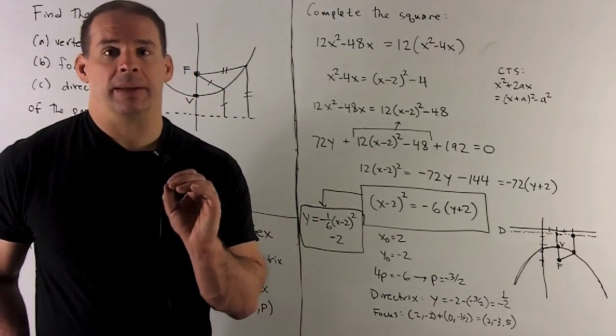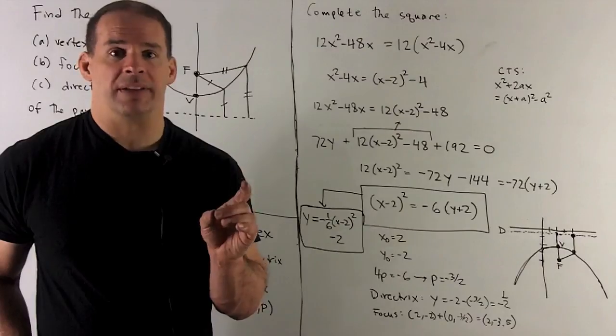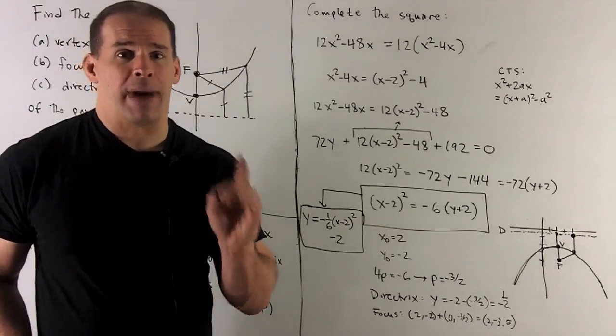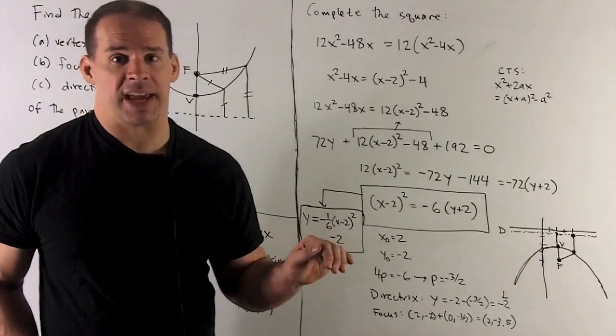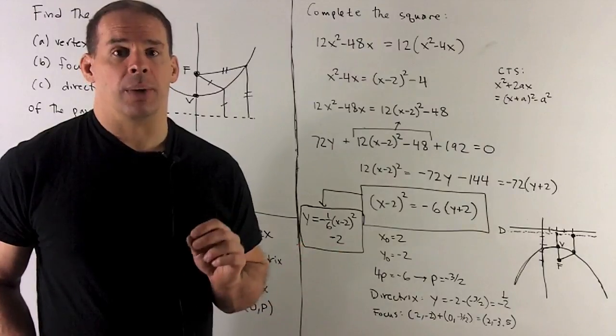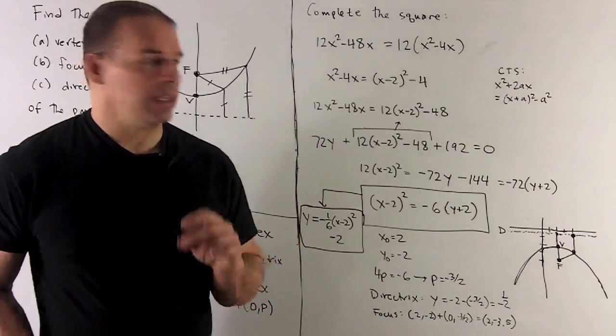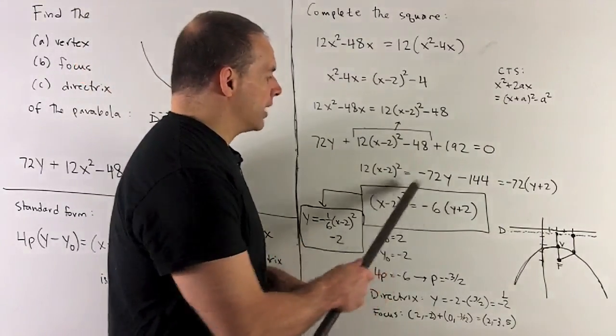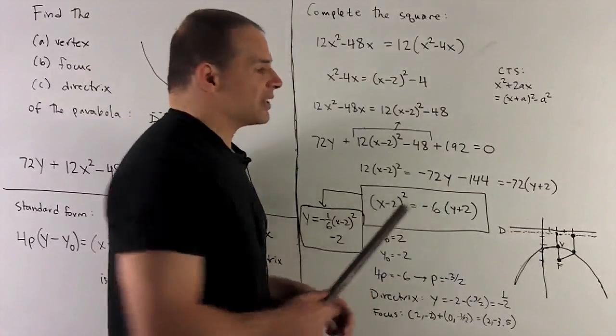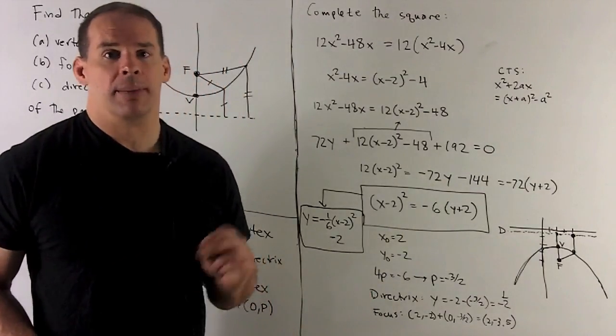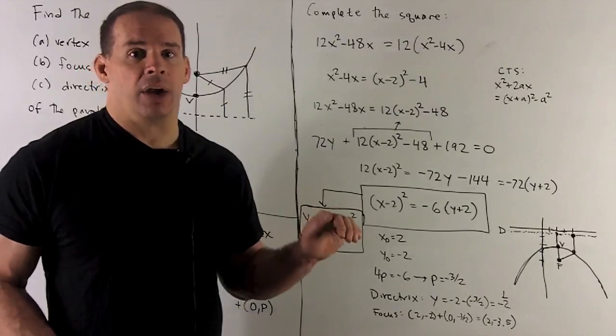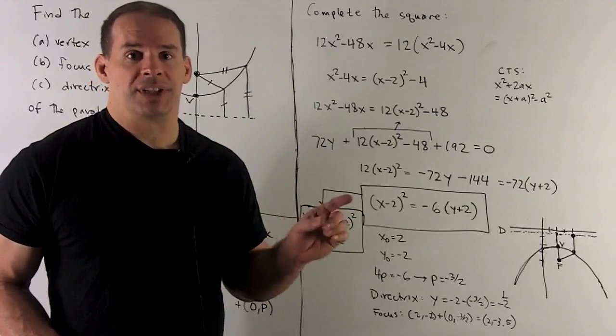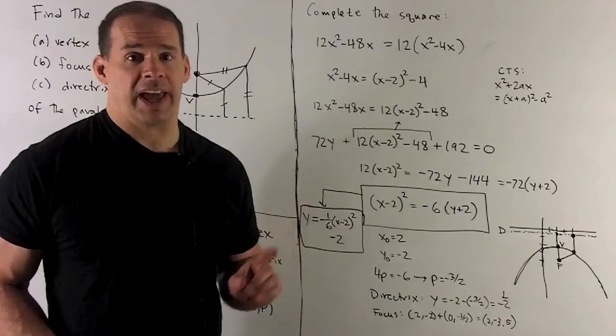Next, let's find P. P is the distance between the vertex and the focus, with a minus sign if our parabola faces down. We have 4P is going to be equal to what's in front of our Y - Y₀, so that's going to be -6, or P equals -3/2. So, we're facing down, distance from vertex to focus is 3/2.